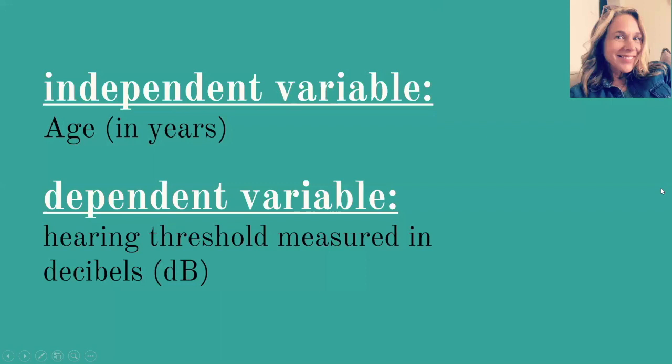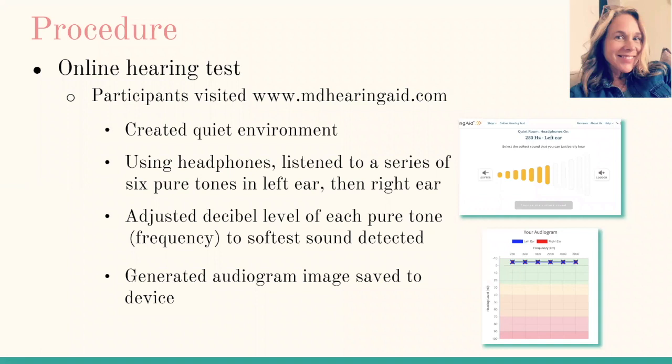In our experiment, the independent variable was participant age and the dependent variable was participant hearing threshold measured in decibels. For the procedure, participants had to complete two separate tasks: take an online hearing test and complete a Google survey. To take the online hearing test, participants needed an internet connection, a mobile device or computer, headphones, and a quiet environment. Using the instructions sent in the recruitment email, participants went to www.mdhearingaid.com, opened the online hearing test, and followed the in-test instructional prompts.